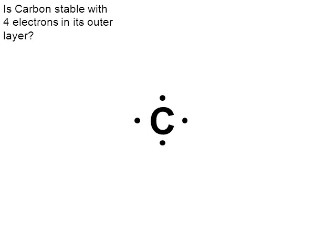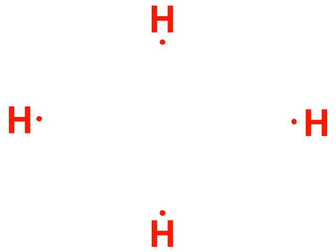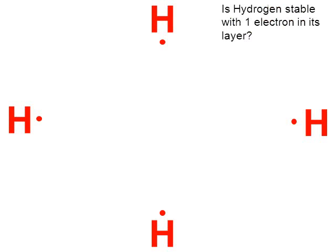When we look at carbon, each dot represents the four electrons that carbon has in its second energy level — I didn't draw the first energy level for simplicity. So with only four electrons in its outer layer, carbon is not stable. Here are four atoms of hydrogen. Hydrogen only has one total electron, and the first level is supposed to hold two, so hydrogens are not stable either.